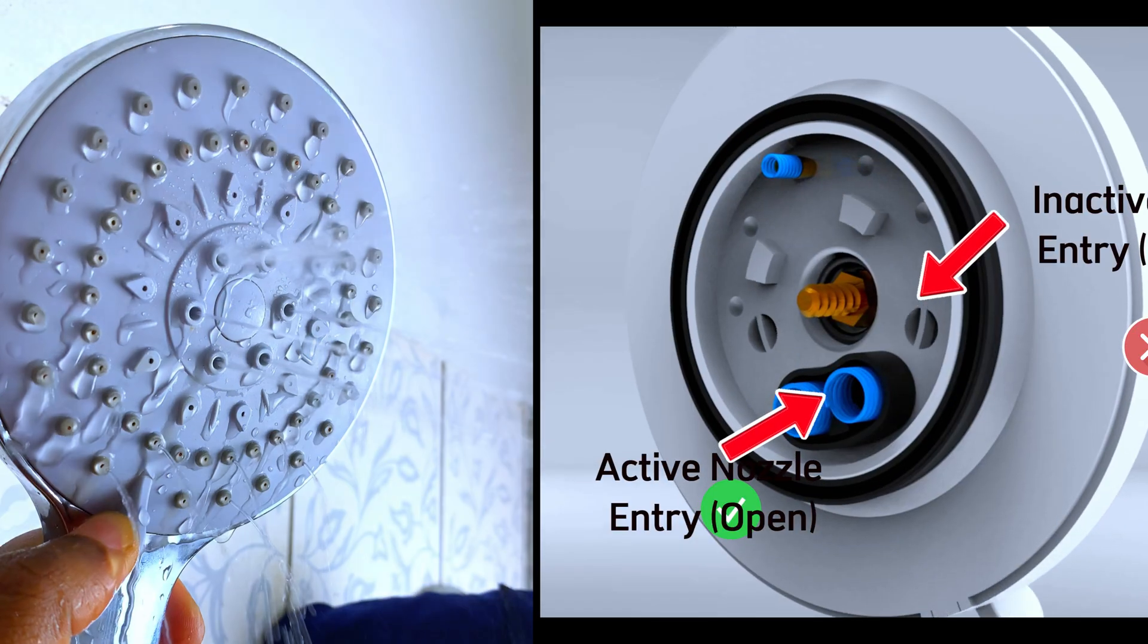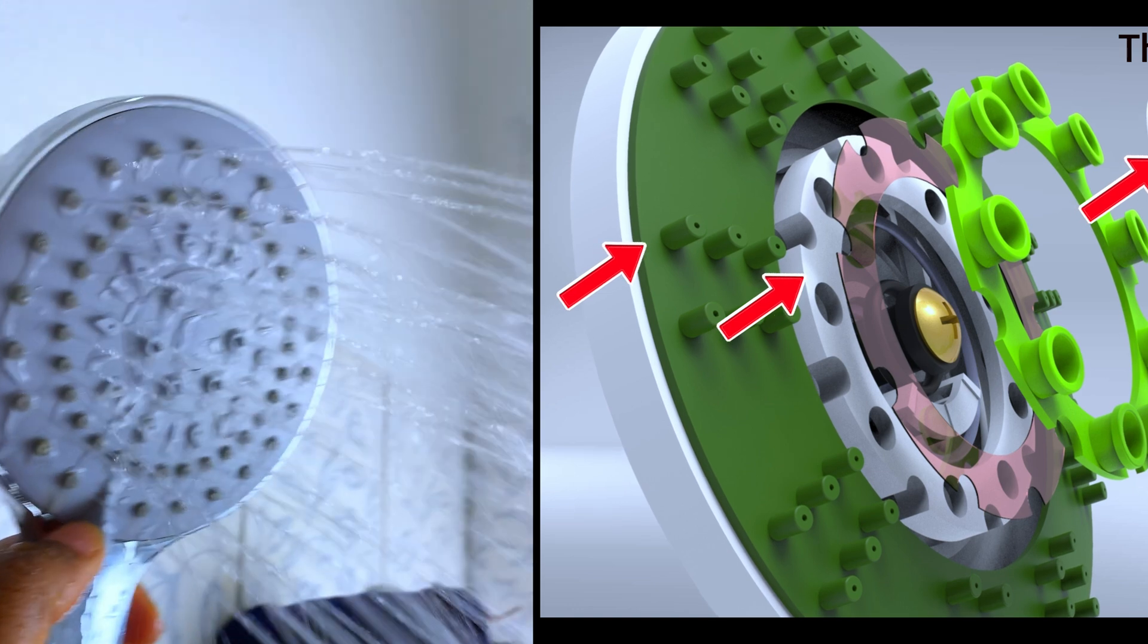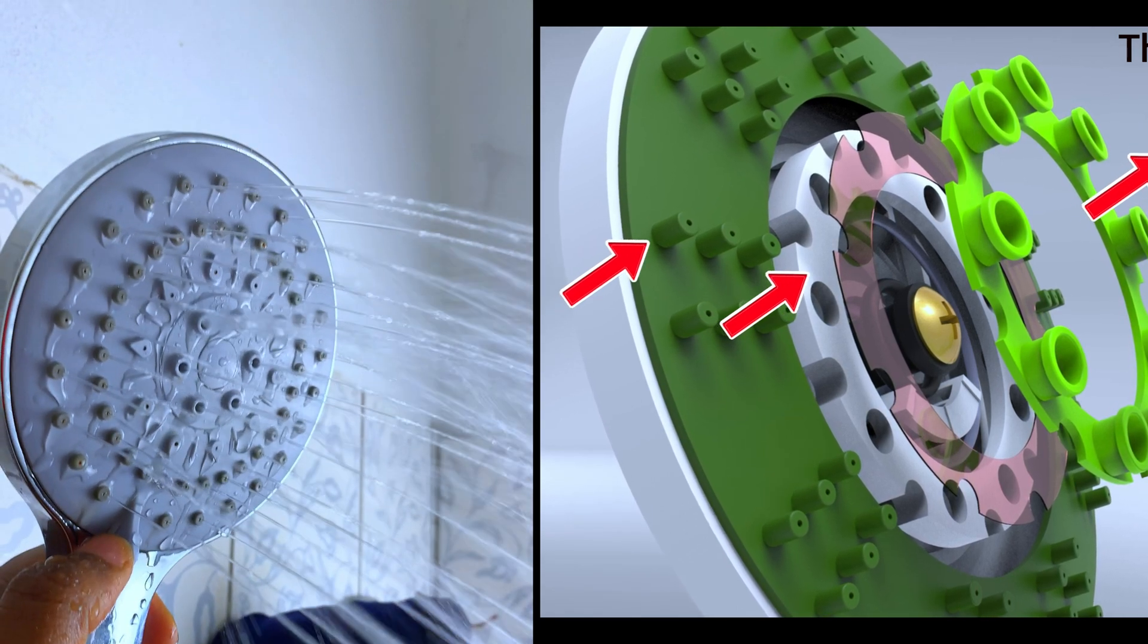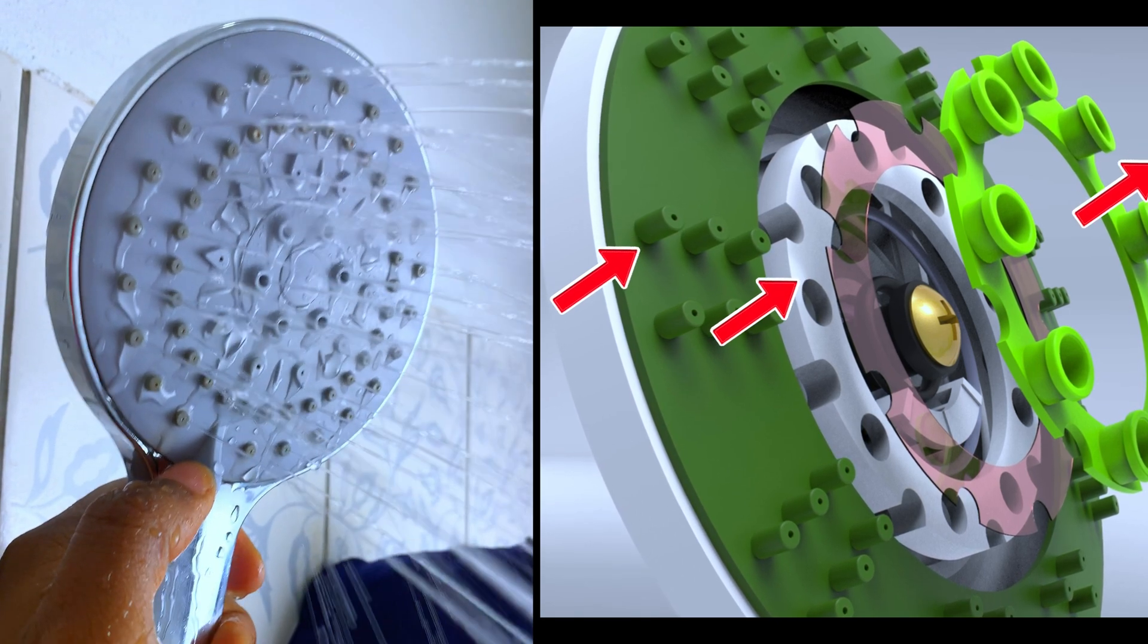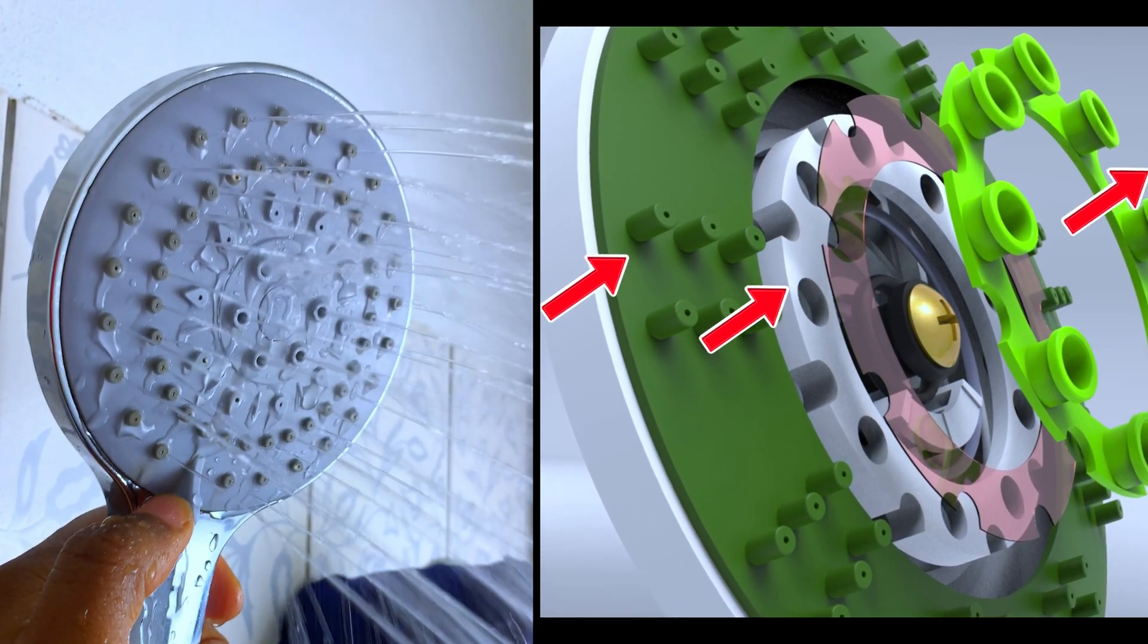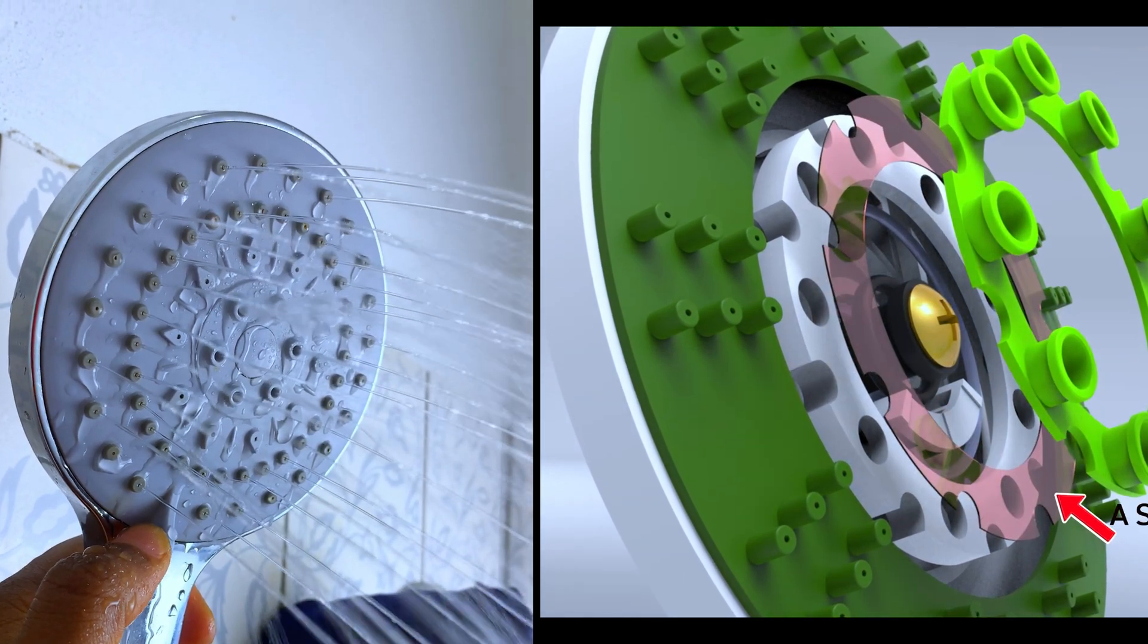And finally we have the combination spray, otherwise known as the mixed pattern. In this pattern, the diverter plate position partially opens two nozzle sections at the same time, causing water to flow through both wide spray and pulsating jets. The overall effect is a mix of wide coverage and some pressure variations offering a balanced experience.